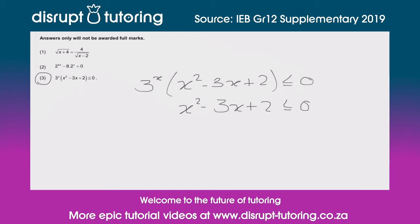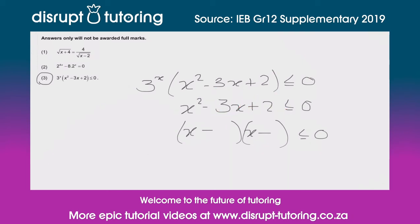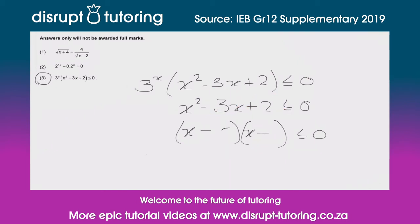Let's factorize that. We need two signs that are the same — both negatives — because we have a negative middle term. We have x and x in the front since the leading coefficient is one, and we need two numbers that multiply to 2 and add to 3: that's 2 and 1. So our factorization gives us critical values of x equals 1 and x equals 2.